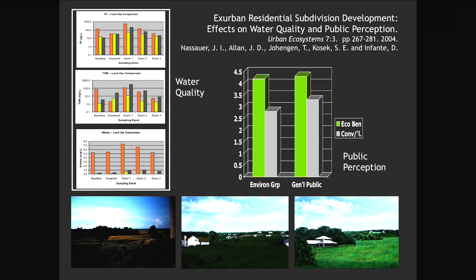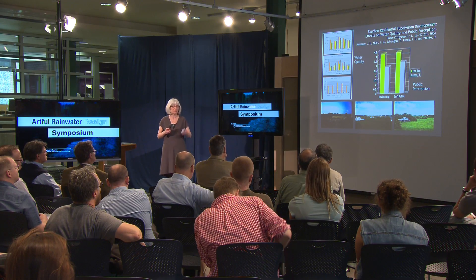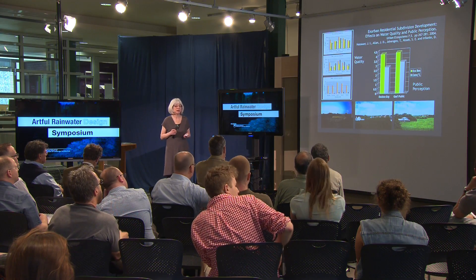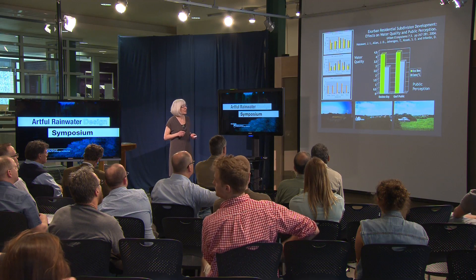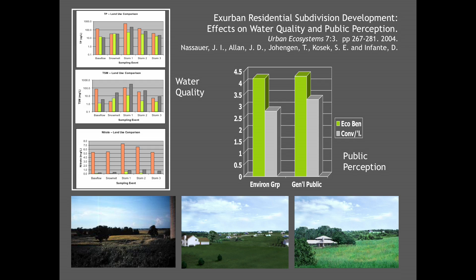We also did a study with aquatic ecologists where we actually measured water quality on six first-order watersheds with cover comparable to an ecologically innovative subdivision with lots of perennial cover, a conventional subdivision, and conventional agricultural land in Michigan. Agriculture was worst for water quality — conventional agriculture in the Corn Belt, unregulated by the Clean Water Act. Conventional was better, and by far the best was the ecologically innovative approach. Encouragingly, regardless of whether you belong to an environmental group or are in the general public, you prefer the ecologically innovative choice for yourself.